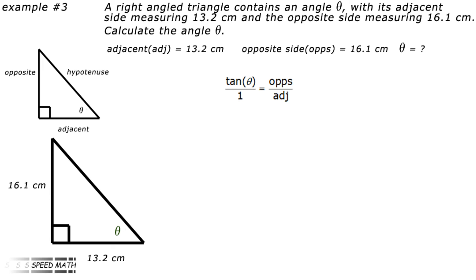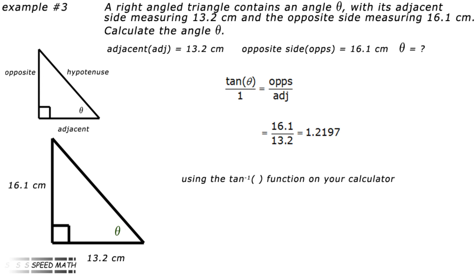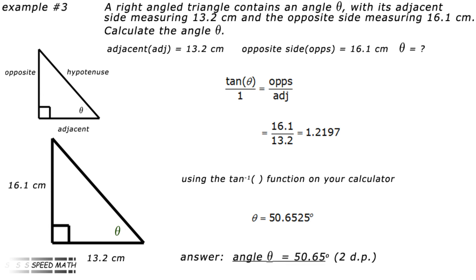Write out the tangent ratio: tan theta equals opposite divided by adjacent. Putting in the values: tan theta equals 16.1 divided by 13.2, which equals 1.2197. Then punch the tan minus 1 function on your calculator and enter 1.2197. Press equals and we have theta equals 50.6525 degrees. Therefore, to two decimal places, theta equals 50.65 degrees.